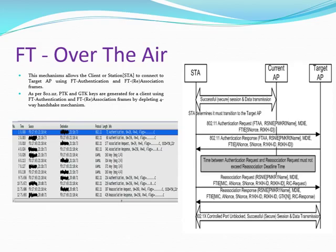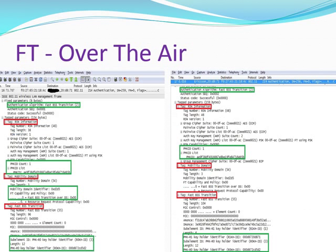An AP must announce its specific support for over-the-air fast BSS transition in the Mobility Domain Information Element in beacons, probe responses, and association/reassociation responses. A client wishing to associate to an FT-enabled authenticator must have a matching Mobility Domain Information Element in its authentication and reassociation request. When roaming within a mobility domain using over-the-air FT, the client uses FT authentication request and response and FT reassociation request and response frames as part of a four-frame reassociation exchange. These four frames contain the appropriate information to build a PTK between the target AP and client. No EAP or four-way handshake is necessary to unlock the 802.1X control port.